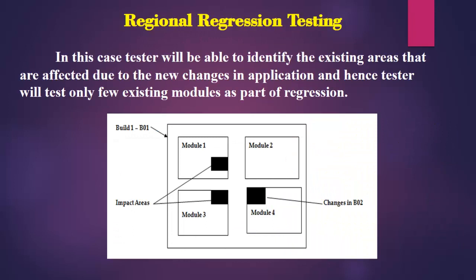In regional regression testing, the tester identifies the existing areas that are affected due to new changes in the application and tests only those few existing modules as part of regression. For example, if there are three modules and a fourth new module is added, and the tester identifies that only module 1 and module 3 are affected by the new change, then performing regression testing only on modules 1 and 3 would be sufficient. This is called regional regression testing.